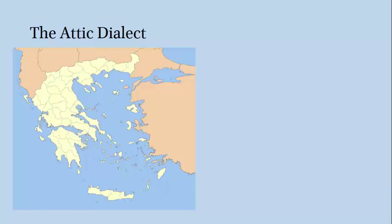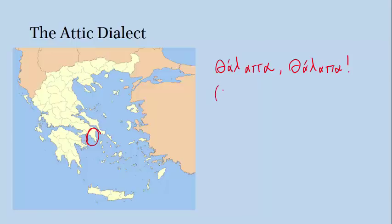So when the historian Xenophon tells us how a beleaguered Greek army, rejoicing to see the sea at the end of a long journey home, cried 'thalatta, thalatta,' we can tell right away that he's an Athenian — that is, he comes from the region of Athens and the surrounding area. Because anyone else would have written 'thalassa, thalassa' for the same word, which means 'the sea, the sea.'